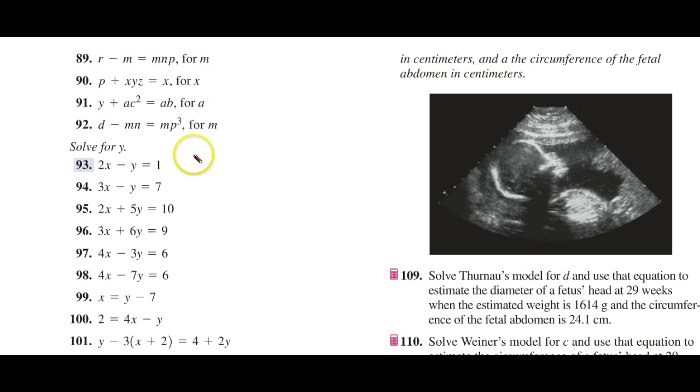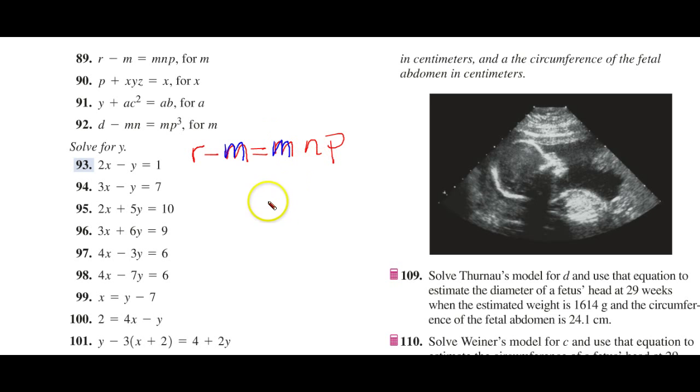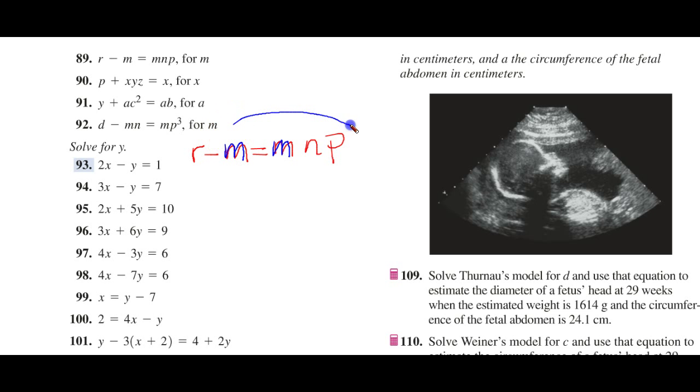And I'll write it out here, because there is some room here. So, we have R minus M equals MNP. And we want to solve for the letter M. Now, in order to solve for the letter M, we have to have all the M's over on one side. So, since this one is negative here, I'm going to transpose that M over here. And it now becomes a positive M.